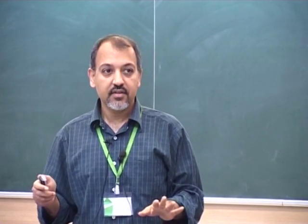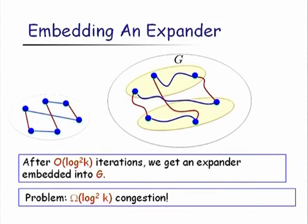The problem with this approach is that paths from different rounds will intersect each other, giving congestion of log² K — not constant. The plan is clear but achieving constant congestion requires more work.